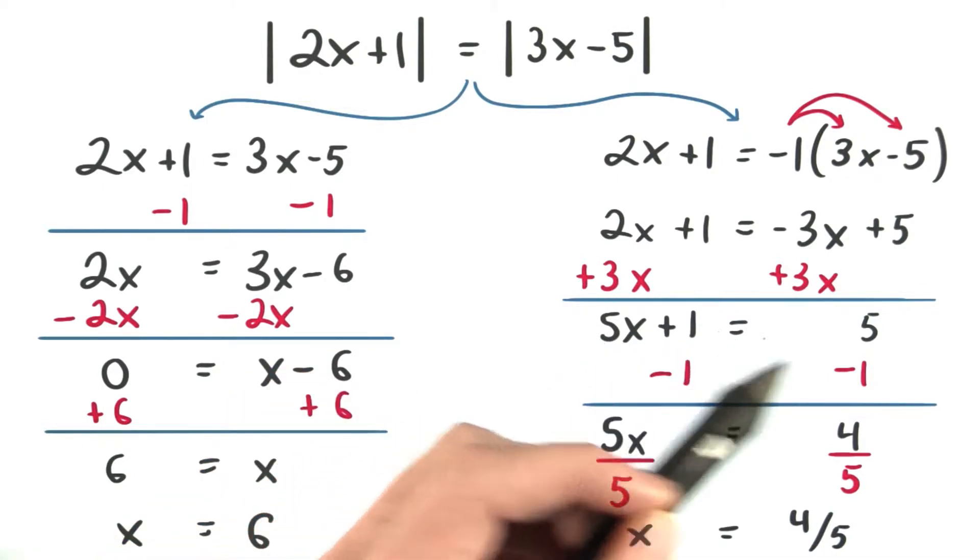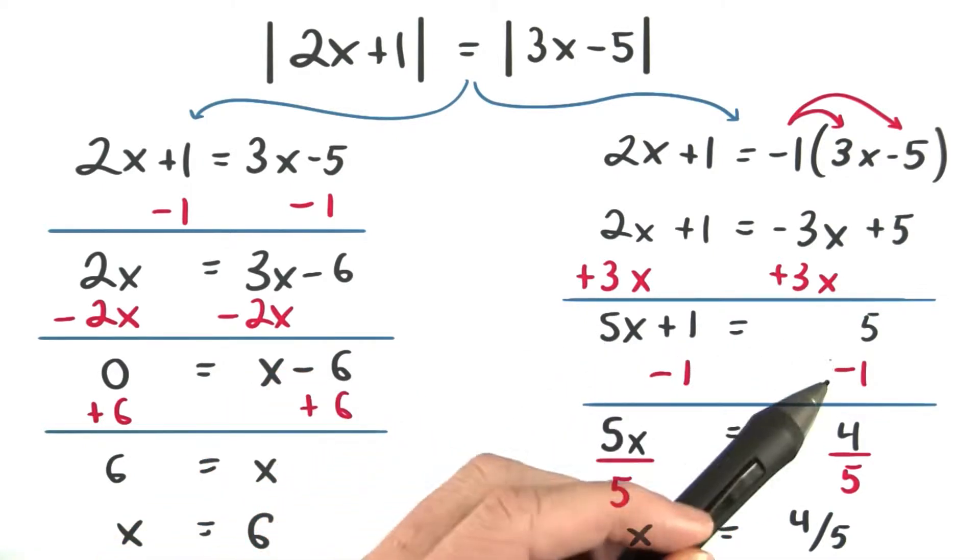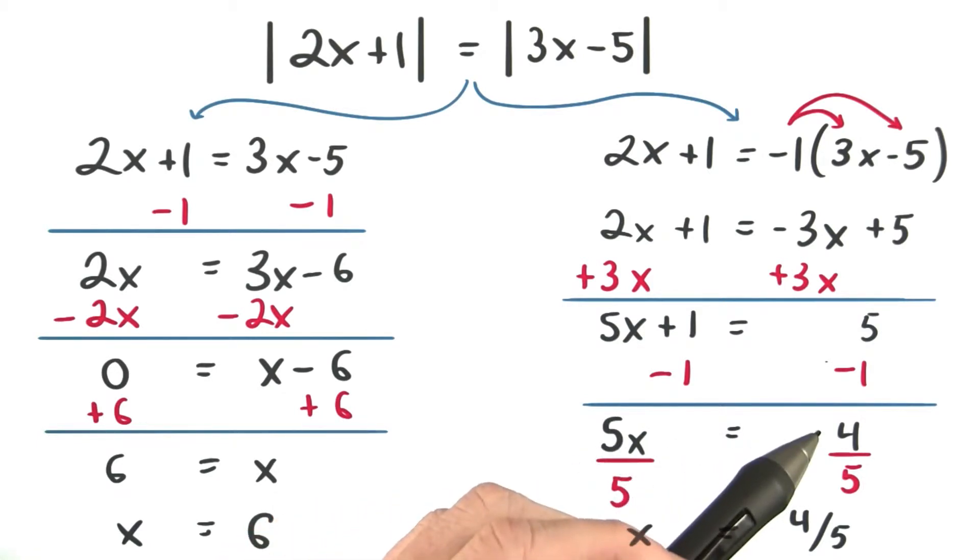So 5x plus 1 is equal to 5. And then we can subtract 1 to get 5x is equal to 4. We divide both sides by 5 to get x is equal to 4 fifths. So here's my solution set. x could equal 4 fifths or x could equal 6. Either one of these would work. Let's make sure.